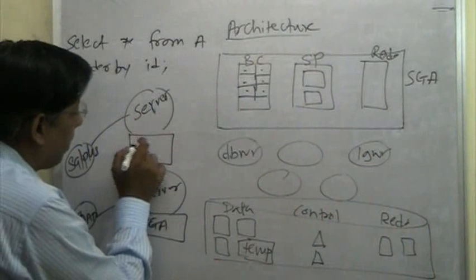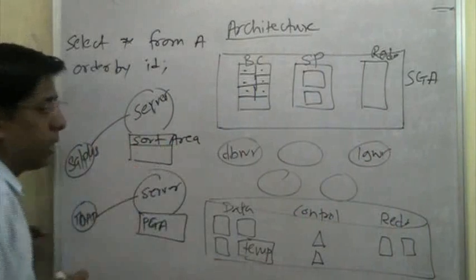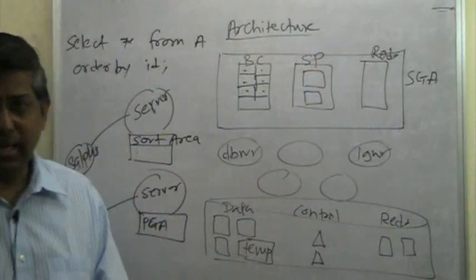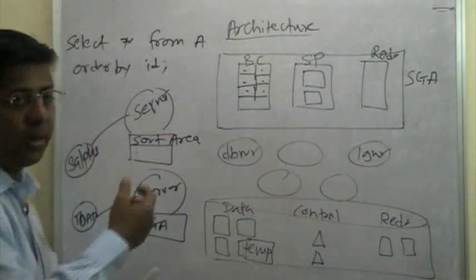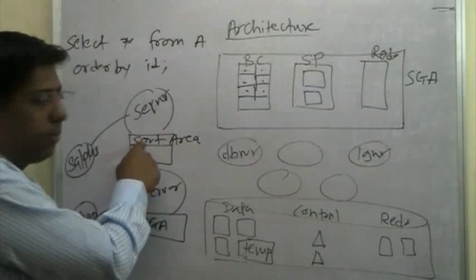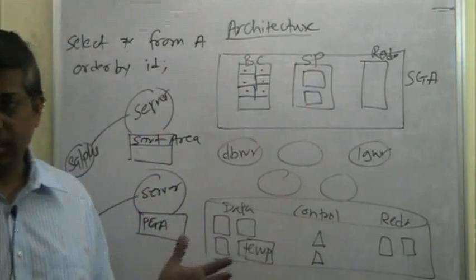So, there is some other sub area here called a sort area. This is where the sorting happens. There is hash area. There are quite a few sub areas inside that for various specific operations. So, data will be sorted over here. Now, this is a very small memory area. Maybe one megabyte or two megabyte depending on how you size it.